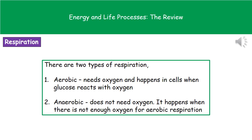The way we actually make this energy is through a process called respiration, and there are two different types we need to know about. The first is aerobic respiration, which needs oxygen. Aerobic respiration occurs where there's plenty of oxygen available, and what we see is that glucose reacts with the oxygen, and one of the products we get is energy.